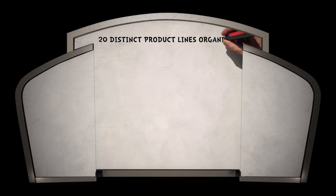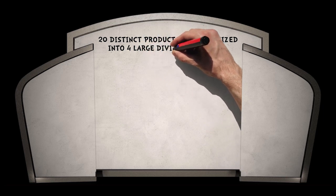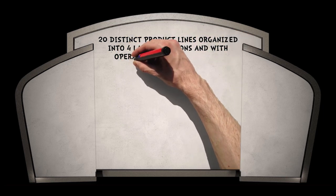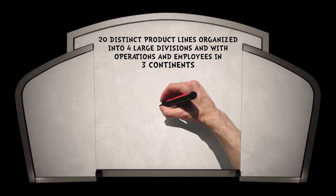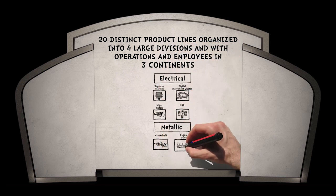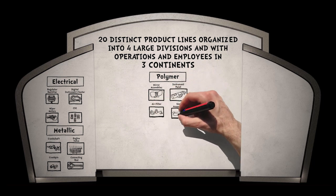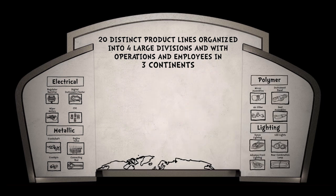Today, Varok is a global player, catering to all segments of the automotive market with over 20 distinct product lines organized into four large divisions and with operations and employees in three continents.